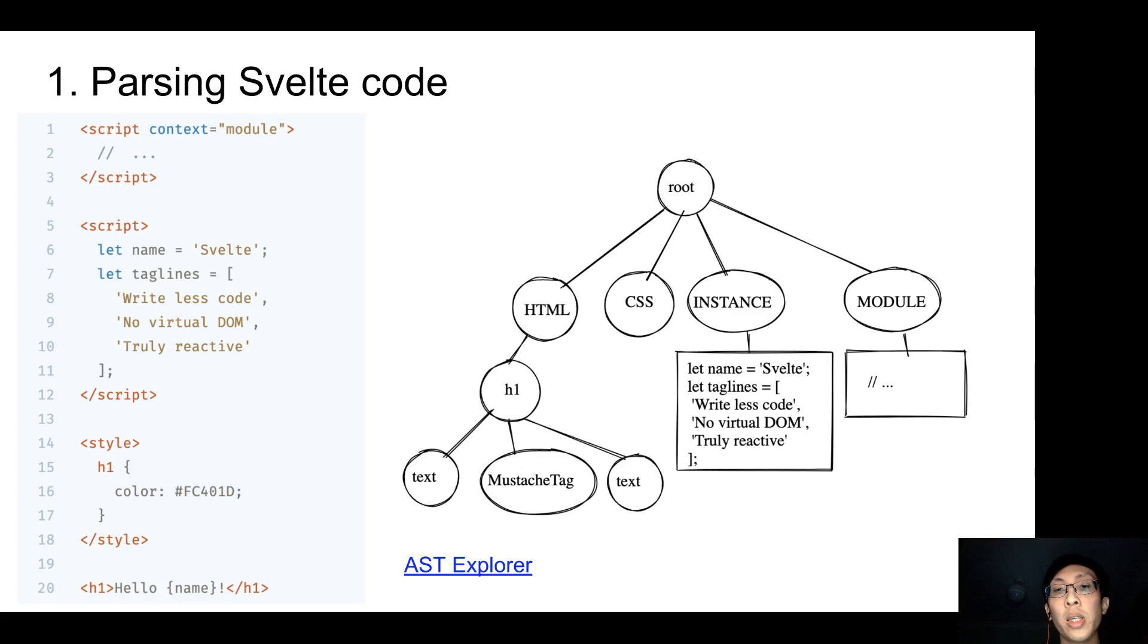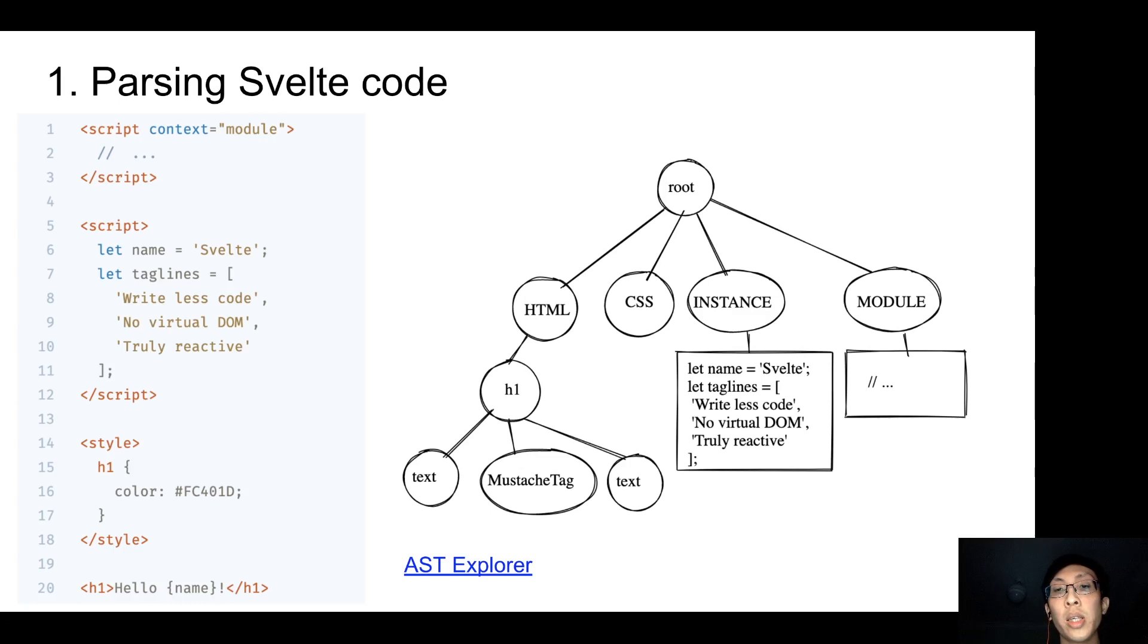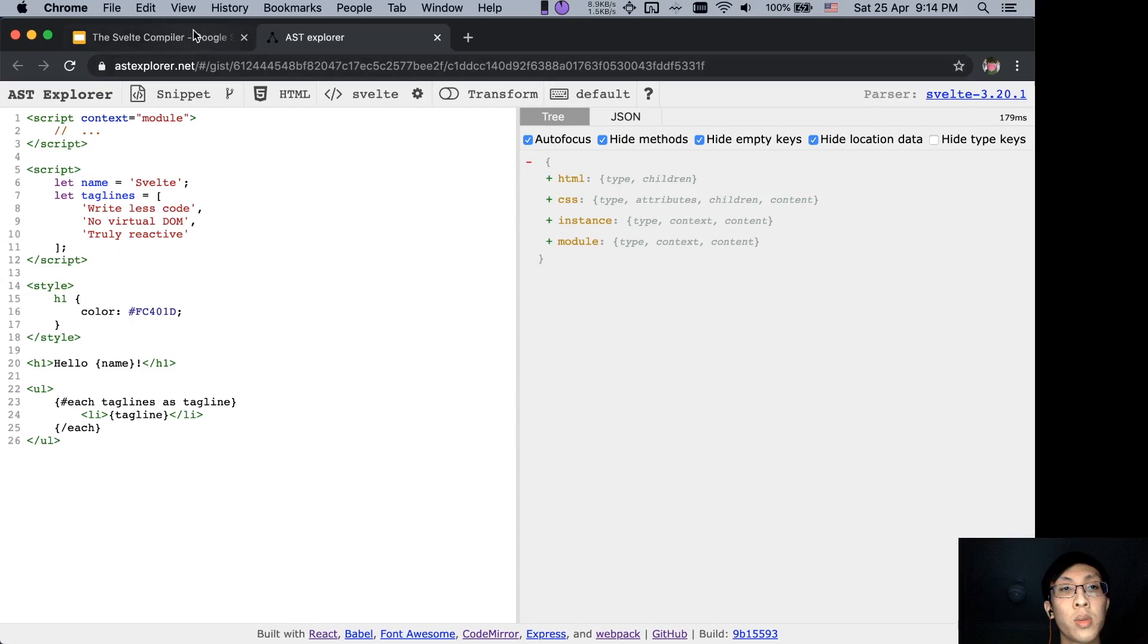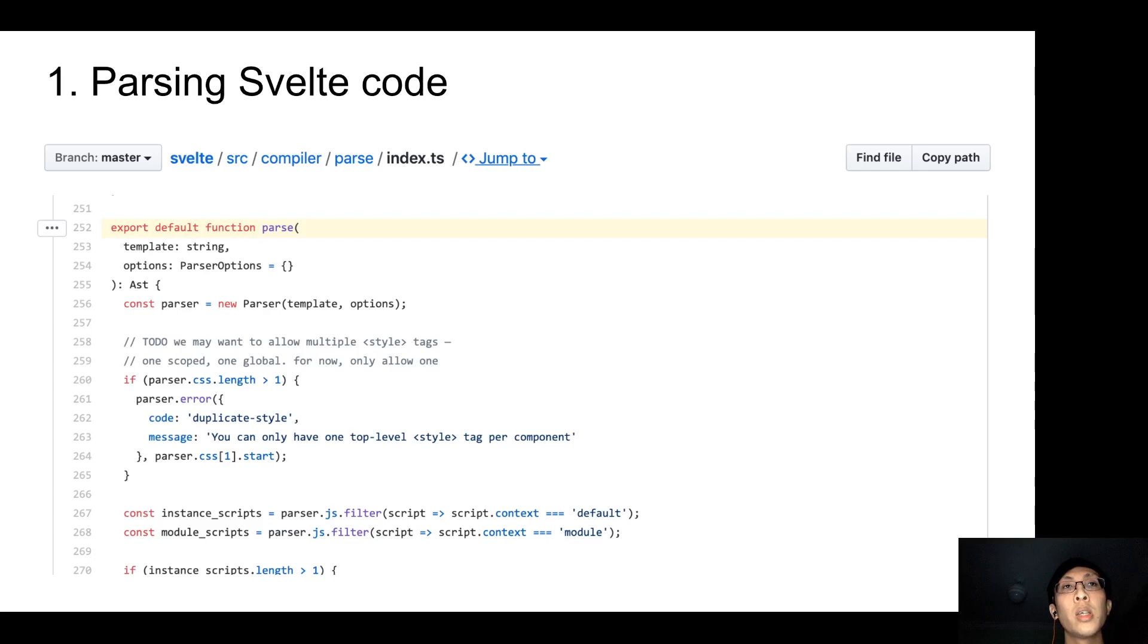You can click on the AST explorer to check this out. HTML, CSS, instance and module. Here is where you can read about the parser code for Svelte.